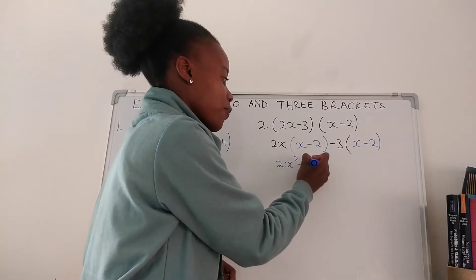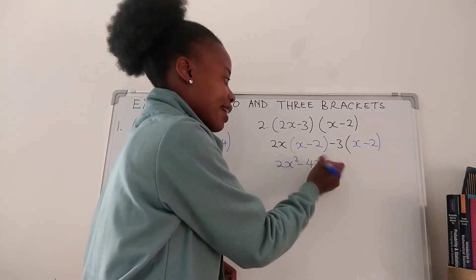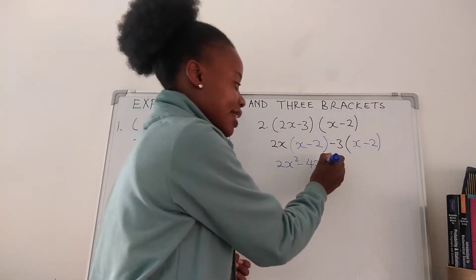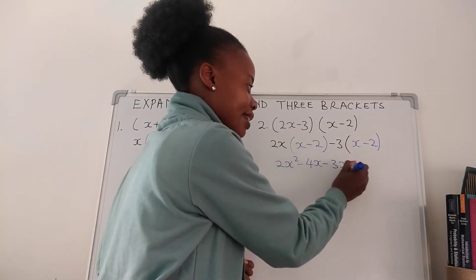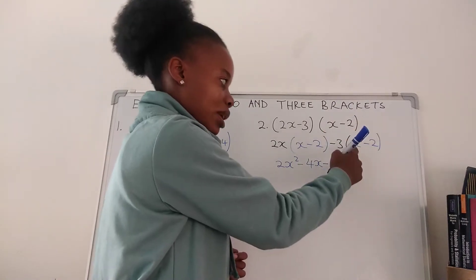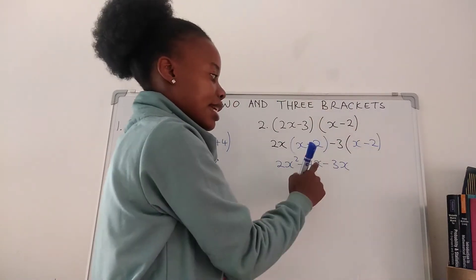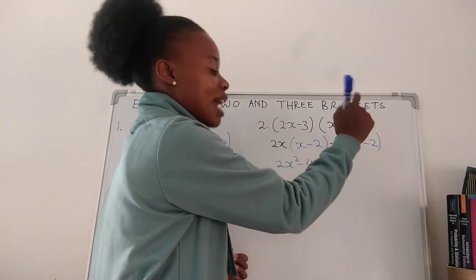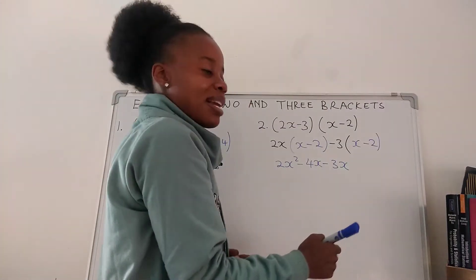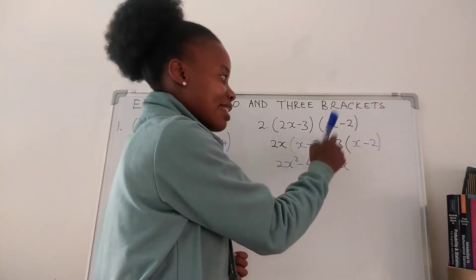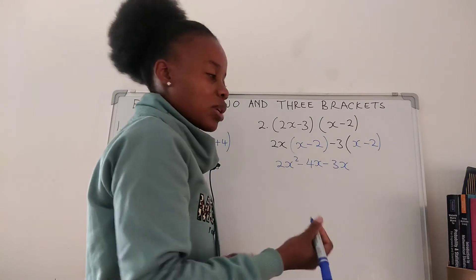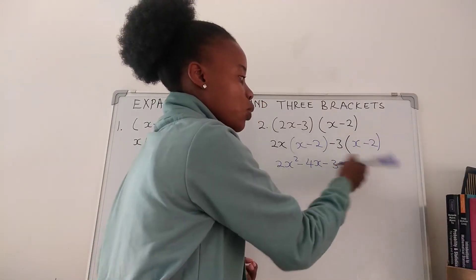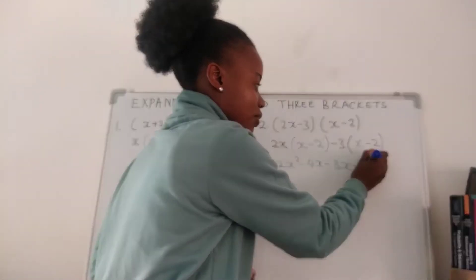Negative 3 times x is negative 3x — if you multiply a negative with a positive it's supposed to give you a negative. Then negative 3 times negative 2: we are multiplying a negative and a negative, so we're going to get a positive. Negative 3 times negative 2 is positive 6.